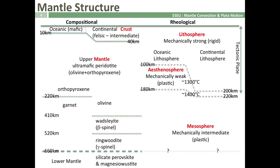On the compositional side we have the earth's crust, which is either oceanic — a mafic composition — or continental, which is felsic to intermediate. Below this, at the Mohorovičić boundary at about 10 kilometres underneath the oceans and 40 kilometres underneath the continents, we go to a completely different composition: the mantle. The mantle is ultramafic in composition and principally formed of peridotite, which is a combination of olivine and pyroxene.